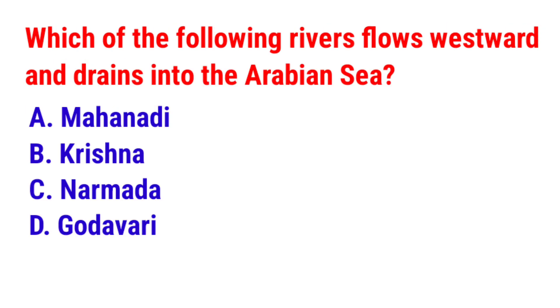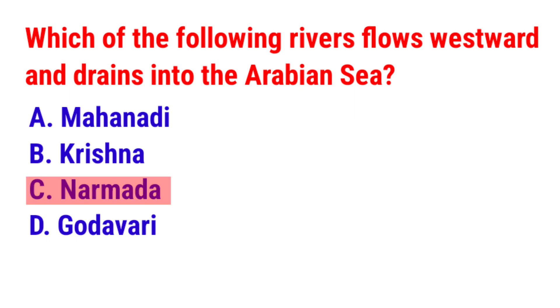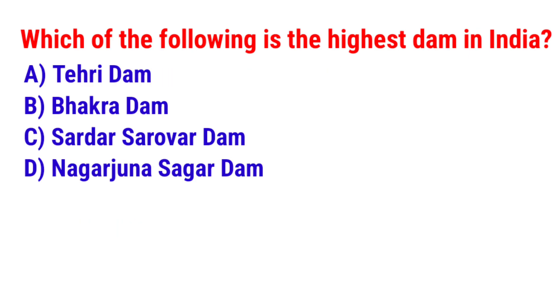Which of the following rivers flows westward and drains into the Arabian Sea? The answer is option C, Narmada.